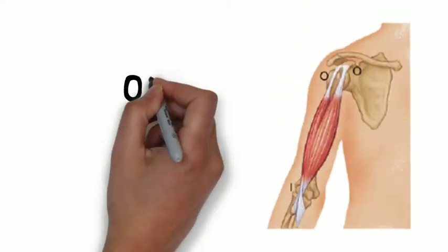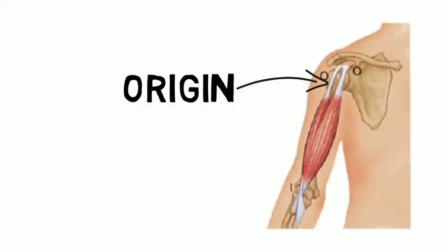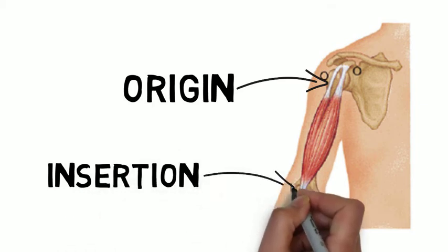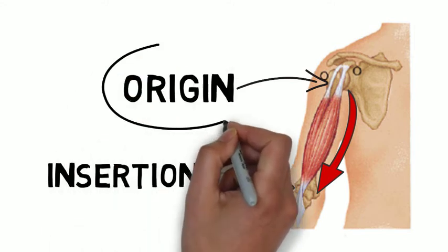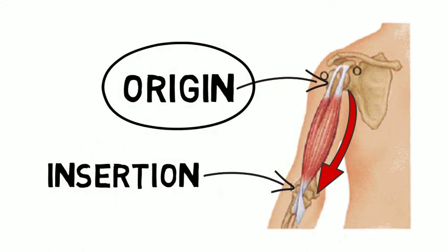Anatomically, skeletal muscles originate from one bone and insert on another bone across a joint. As the muscle contracts, the bone which contains the origin side of a muscle remains fixed while the bone which contains the insertion side of a muscle moves.